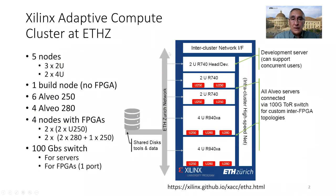The cluster has five nodes. Three of them are two rack units in height and two are four rack units. Of the five compute nodes, one is a build node used for development — compilation, building, and software development. The other four nodes actually have FPGAs. We have a total of 10 FPGAs: six are Alveo U250 cards and four are Alveo U280. Two nodes have two cards each with U250s, and two nodes have three cards — two U280s and one U250 each.